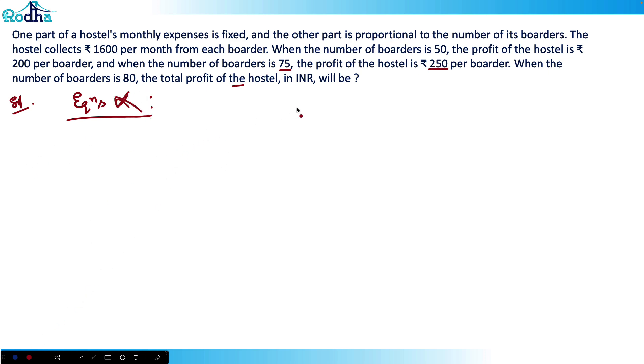When the number of boarders is 50, the profit of the hostel is rupees 200 per boarder, so the profit becomes 50 into 200 equals rupees 10,000. When the number of boarders is 75, the profit is rupees 250 per boarder, so 75 into 250 equals rupees 18,750. We need to calculate when the number of boarders is 80, what is the profit.